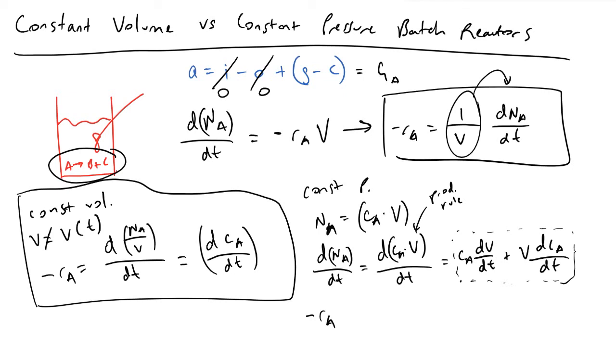So now if we're interested in how the rate of formation of A in our system is impacted by having a constant pressure process, what we would say is that we have this one over V term: one over V times dnA/dt, which we just evaluated to be cA times dV/dt plus V times dcA/dt.